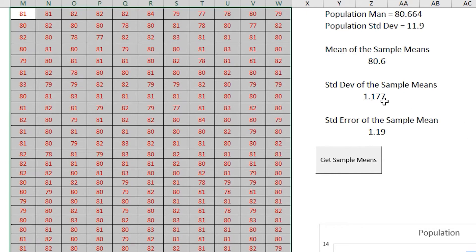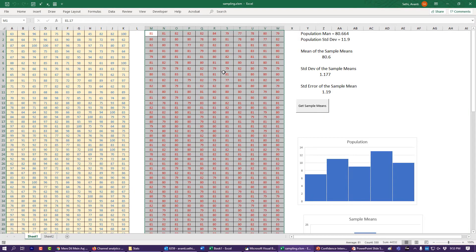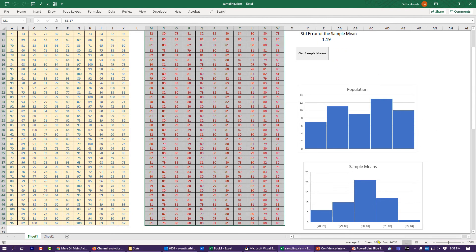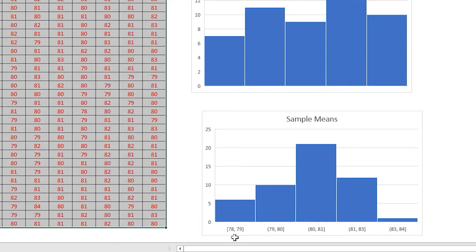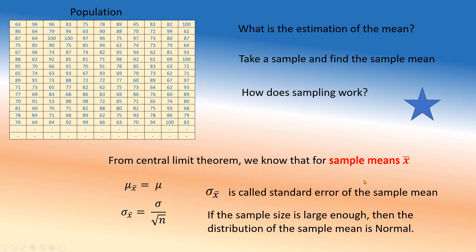And now what we see is 1.17 and 1.19. That's 11.9 over 10. They're pretty close to each other. 80.6, 80.664. And now these ones are much much tighter now than what we had before. Look at the range here now, 78, 79 to barely we have anything here.